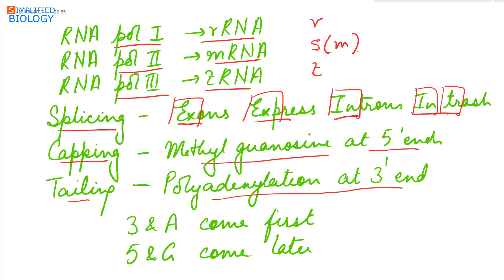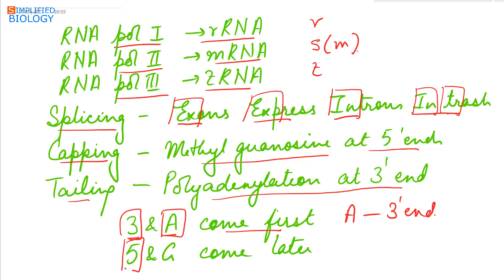For tailing: polyadenylation occurs at the 3 prime end. Since 3 comes first numerically and A comes first alphabetically, adenine is added at the 3 prime end. Since 5 comes later numerically and G comes later alphabetically, guanine (methyl guanosine) is added at the 5 prime end for capping.